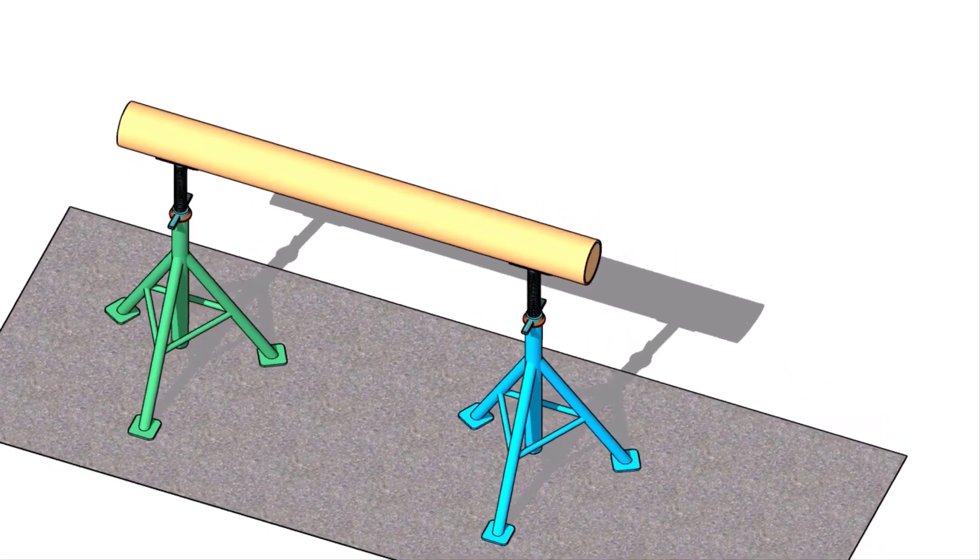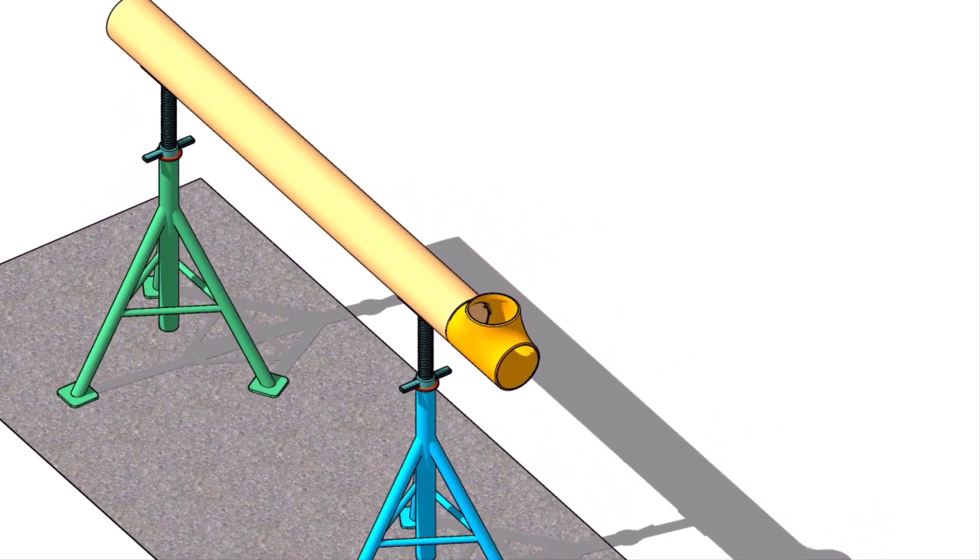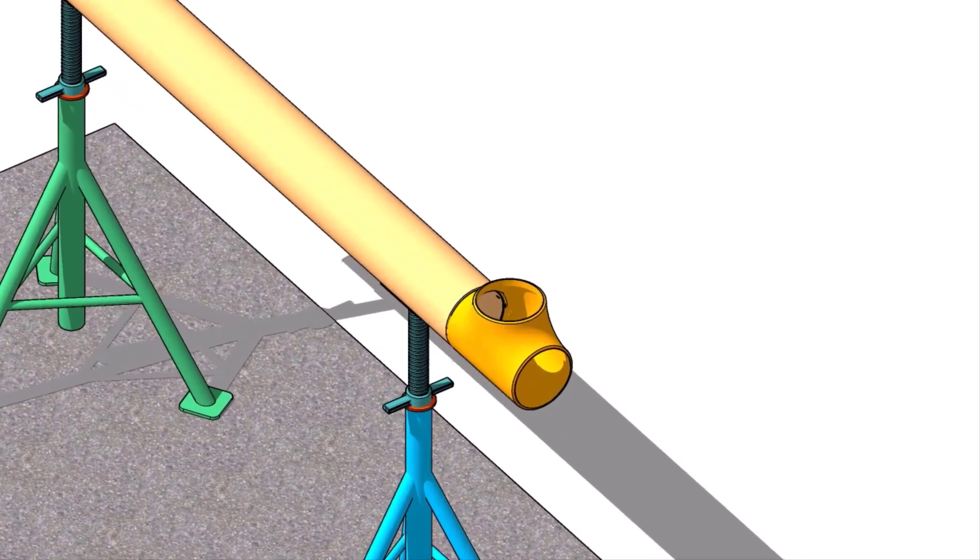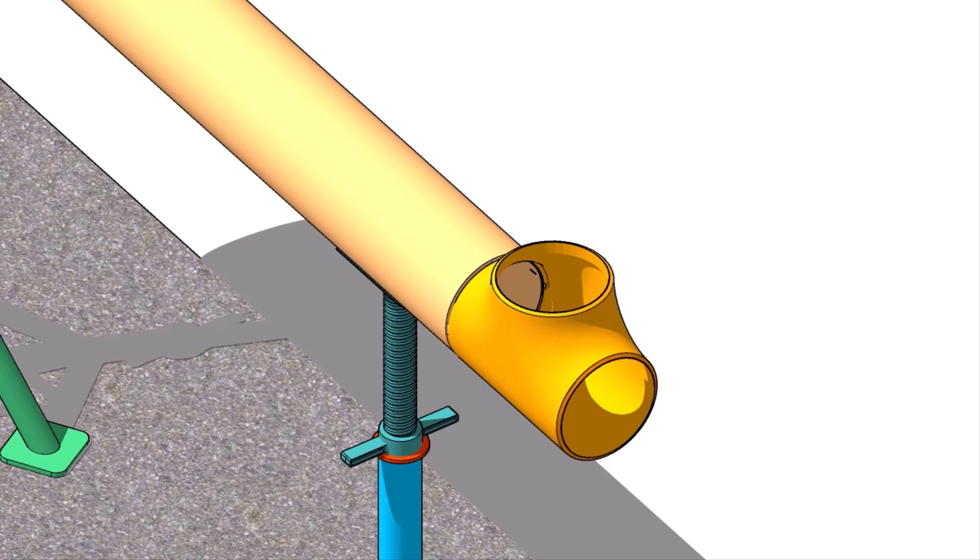Tack weld the tee to a piece of pipe, don't worry about the gap or anything. Now, maintain the top level of the tee from both sides.